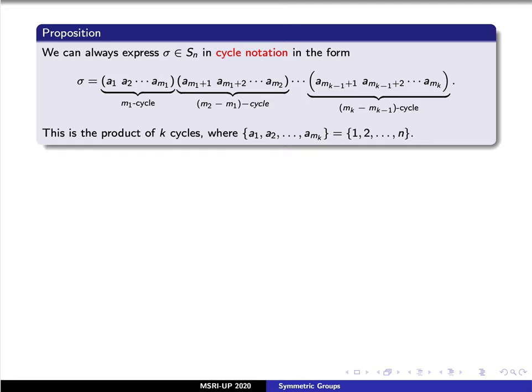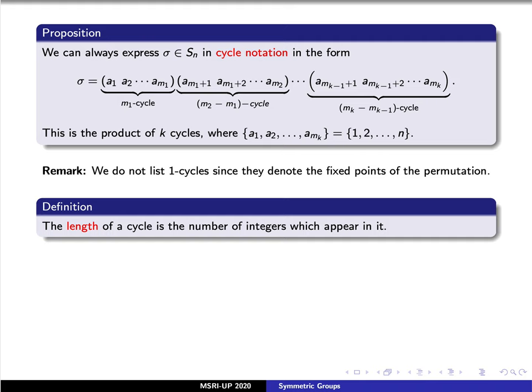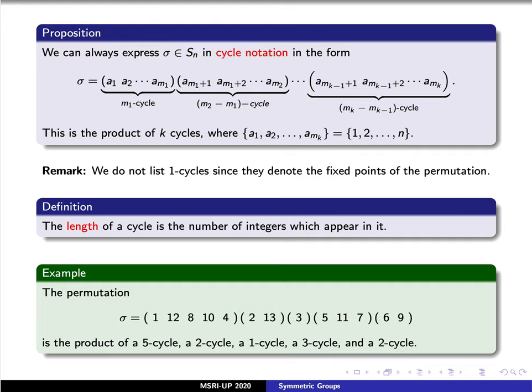We can always express a permutation in this form as a product of various cycles, and each cycle is just a rearrangement of the numbers 1 through n. Typically we don't list the one-cycles — that is, parentheses containing just one element — because they denote the fixed points of the permutation. The length of a cycle is the number of integers which appear in it. In our example, the first set (1, 12, 8, 10, 4) has five elements and is called a five-cycle. The (2, 13) is a two-cycle. The (3) by itself is a one-cycle. The (5, 11, 7) is a three-cycle. And (6, 9) is a two-cycle.